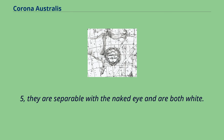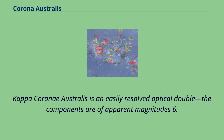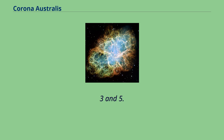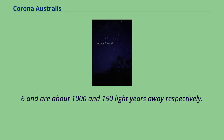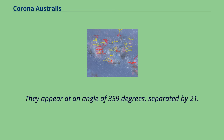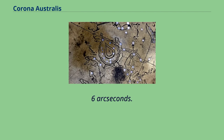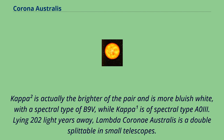Kappa Coroni Australis is an easily resolved optical double; the components are of apparent magnitude 6.3 and 5.6 and are about 1,150 light-years away respectively. They appear at an angle of 359 degrees, separated by 21.6 arcseconds. Kappa² is actually the brighter of the pair and is more bluish-white, with a spectral type of B9V, while Kappa¹ is of spectral type A0IV.